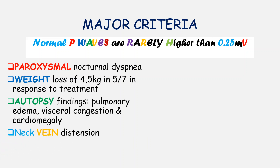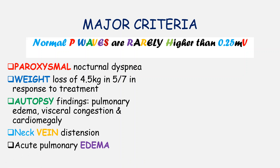The word 'normal' stands for 'neck' and the letter V in 'waves' stands for 'vein,' so together this gives us neck vein distension. You can remember it using either letter. The letter E in 'waves' stands for edema, but in our major criteria we are concerned with acute pulmonary edema, which is usually a finding made on imaging studies.